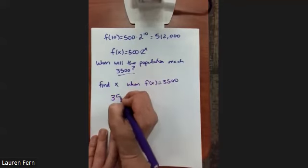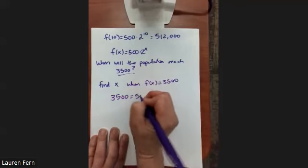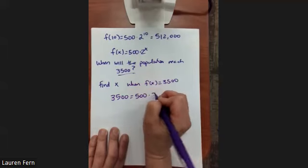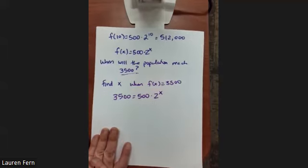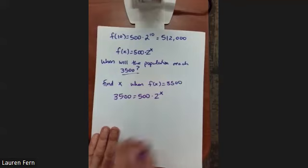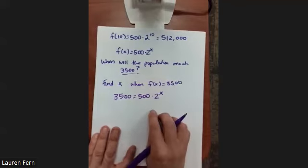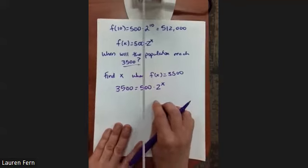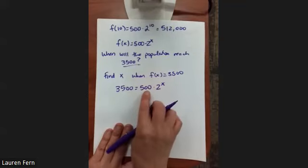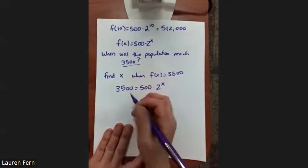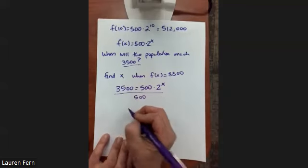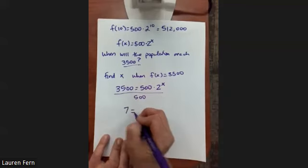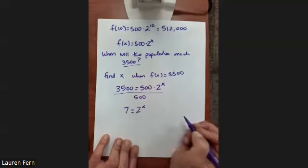We want to find x when our function value is 3,500. We plug it in: 3500 = 500 · 2^x. The first step in solving for x is to get rid of the number in front — divide both sides by 500 — and we get 7 = 2^x.